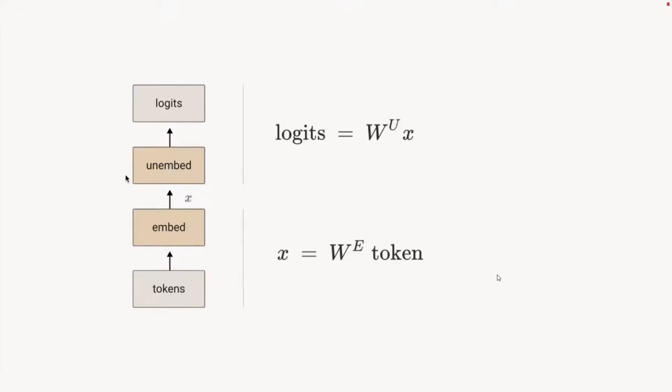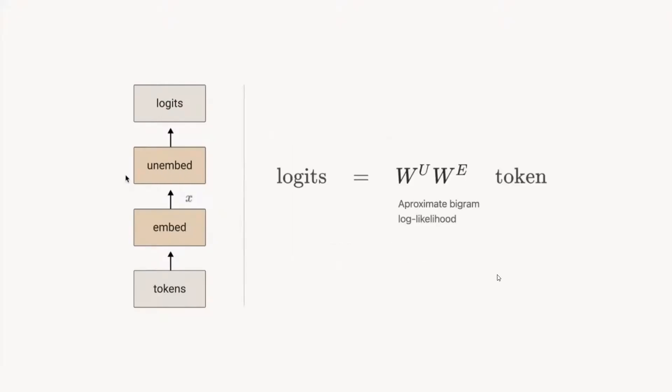We multiply by the unembedding matrix to get the logits — that's the entire model. We're going from the previous token to predicting the next by multiplying through those two matrices. The product W_U W_E must represent the bigram statistics — the frequencies with which one token follows another — specifically the bigram log-likelihoods, since we feed into a softmax. It's an approximation because the embeddings are much smaller than the vocabulary size, so the matrix is low-rank.